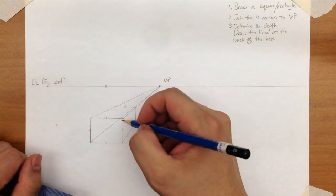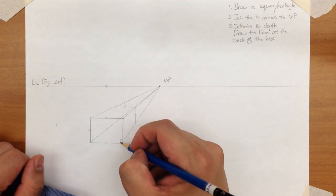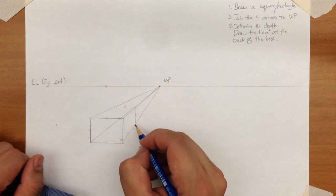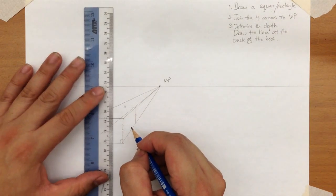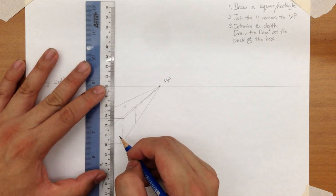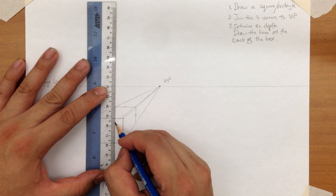And notice that the vertical lines that we drew, these are 90 degrees perpendicular to the eye level. Okay. So once you've drawn that, we're going to draw the last two lines, which is the inside of the box at the back. Okay. Technically, we would not see these lines in real life.